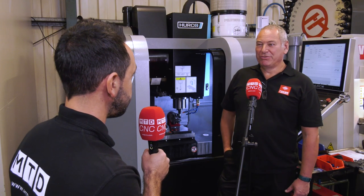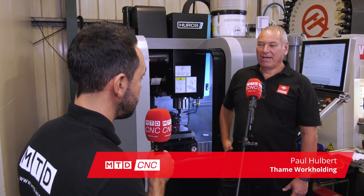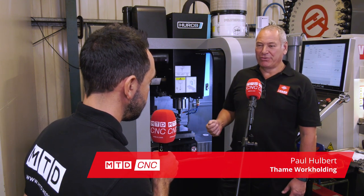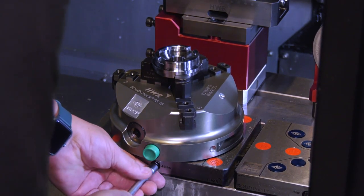They're very quick to use. You put them on the table and you've got a zero point. You put your vices on and off with one bolt, so it's a very quick system.